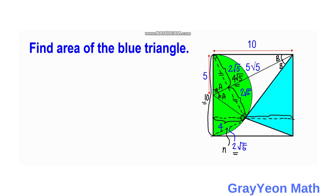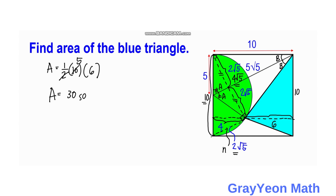Now it is easy to find the height of the blue triangle: it is simply 10 minus 4, which equals 6. The base is 10. For the final step, the area equals one half times base times height, so area equals one half times 10 times 6, which gives us 30 square units. That is our answer.